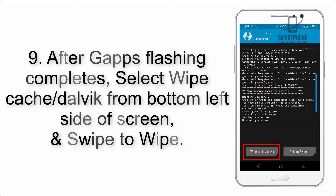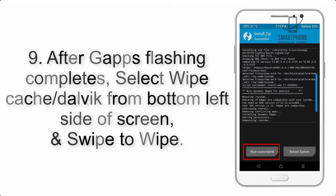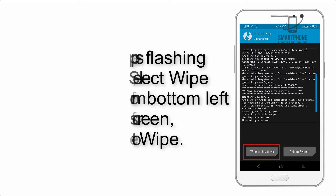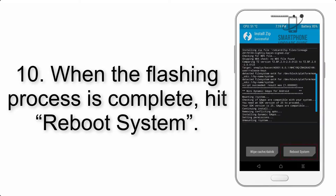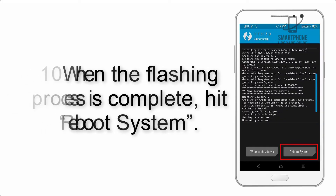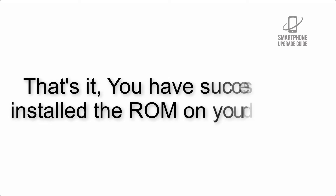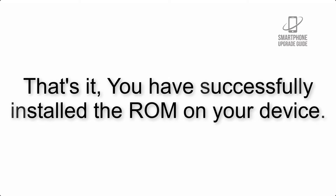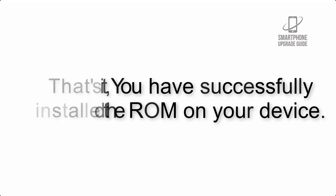Step 9: After Gapps flashing completes, select Wipe Cache and Dalvik from the bottom left side of the screen and swipe to wipe. Step 10: When the flashing process is complete, hit Reboot System. That's it — you have successfully installed the ROM on your device.